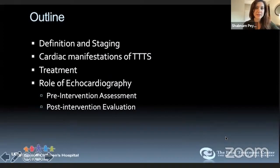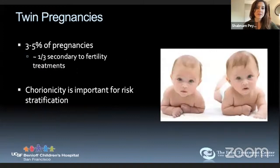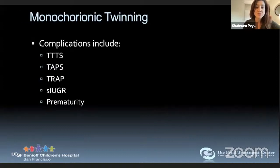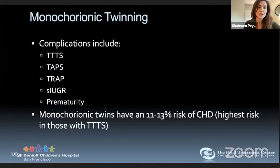We'll cover cardiac manifestations of TTTS and the role of echocardiography in both pre- and post-intervention assessment. Twin pregnancies comprise 3 to 5% of all pregnancies, a third thought to be secondary to fertility treatments. Chorionicity — whether twins share a placenta — is critical for risk stratification. Monochorionic twinning is associated with many complications including TTTS, and monochorionic twins also have an increased risk of structural congenital heart disease, so we recommend fetal echocardiogram for all monochorionic twins.